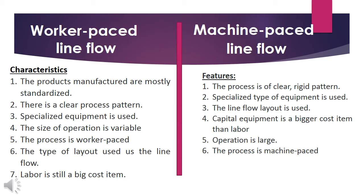For the worker-paced line flow, characteristics include: products manufactured are mostly standardized, there is a clear process pattern, specialized equipment is used, the size of operation is variable, the process is worker-paced, line flow layout is used, and labor is still a big cost item. For machine-based line flow: the process has a clear rigid pattern, specialized equipment is used, line flow layout is used, capital equipment is the cost item rather than labor, operation is large, and the process is machine-based. The key distinction is that in worker-paced flow, labor plays the biggest role, while in machine-based flow, the equipment and machines play the biggest role.